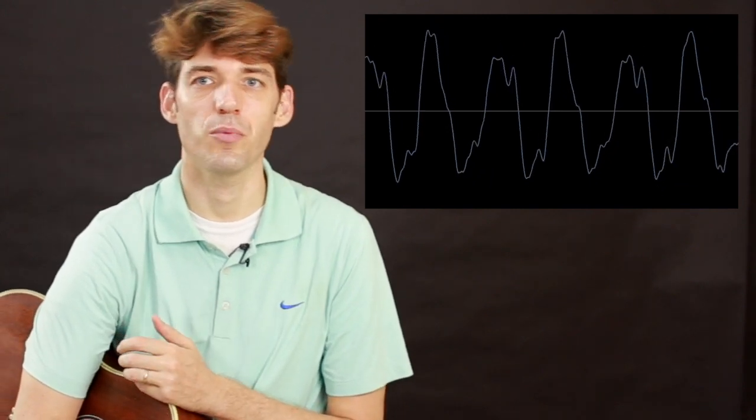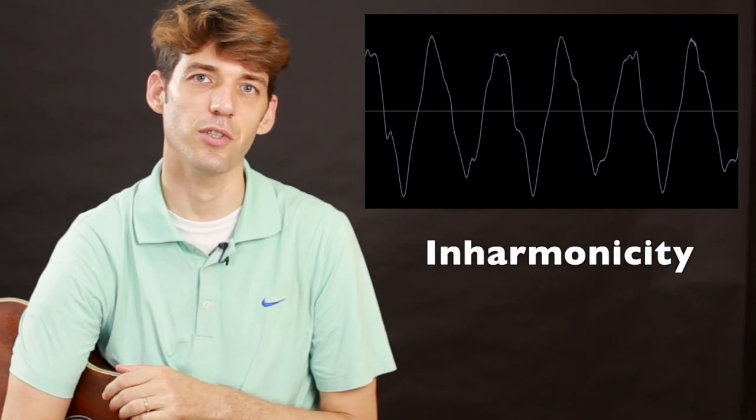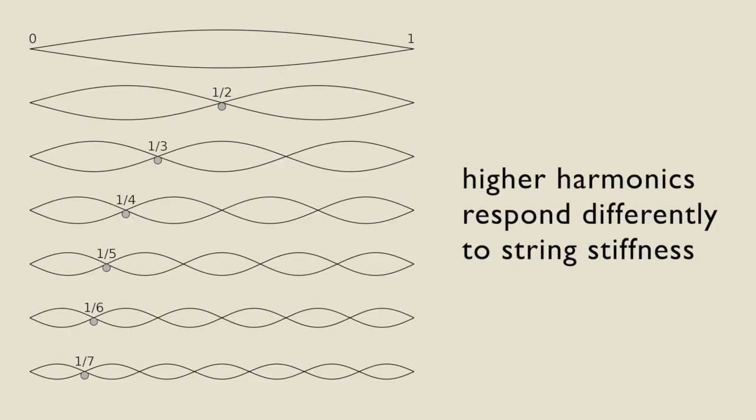The phenomenon of discrepancies in tuning between various harmonics of a string is called inharmonicity. Because the wavelength of the higher harmonics is shorter, their vibration forces the core of the string to bend more, and the resistance provided by the stiffness in the core raises the pitch.